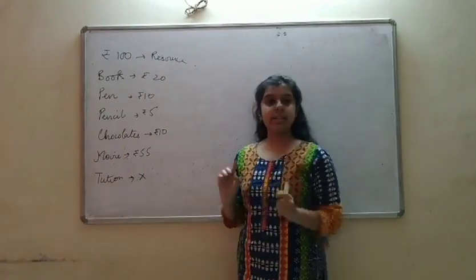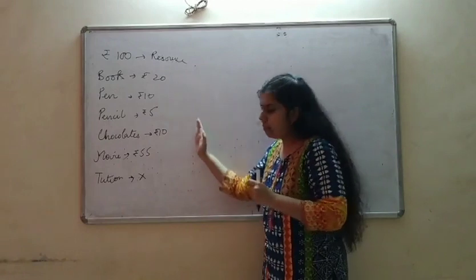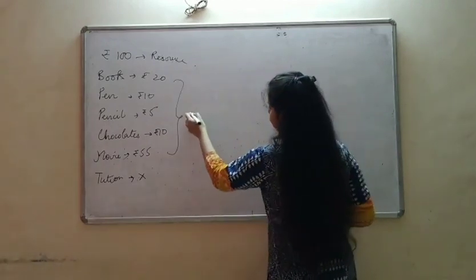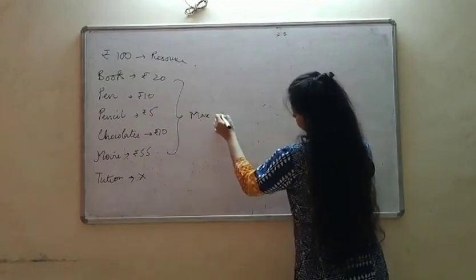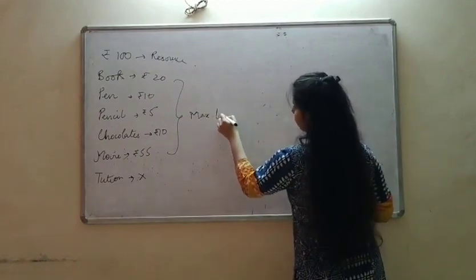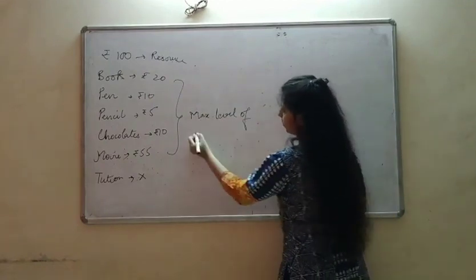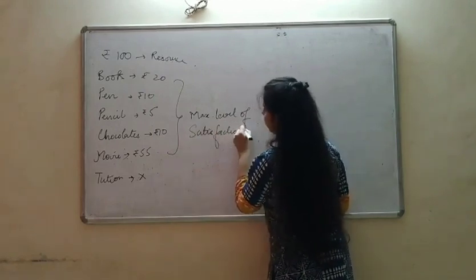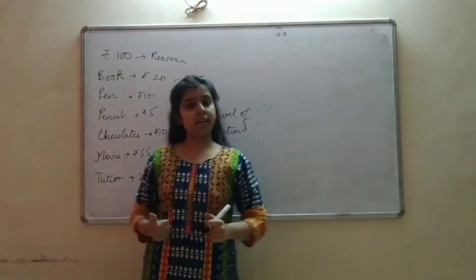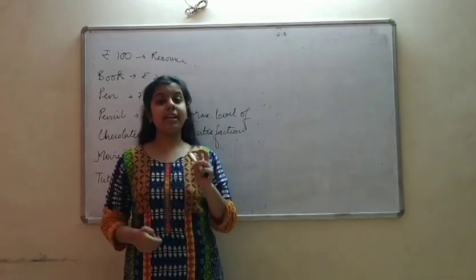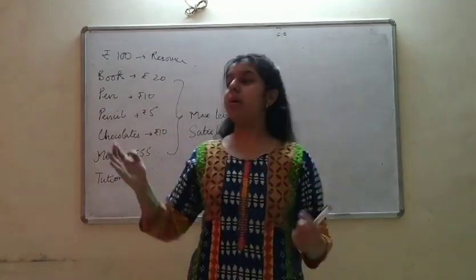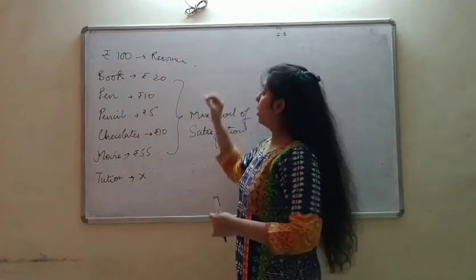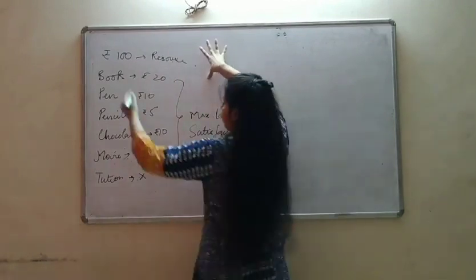Because I can fulfil the maximum of my desires, I am getting a maximum level of satisfaction. Why am I getting a maximum level of satisfaction? Because within my limited resources, I have my maximum desires fulfilled.